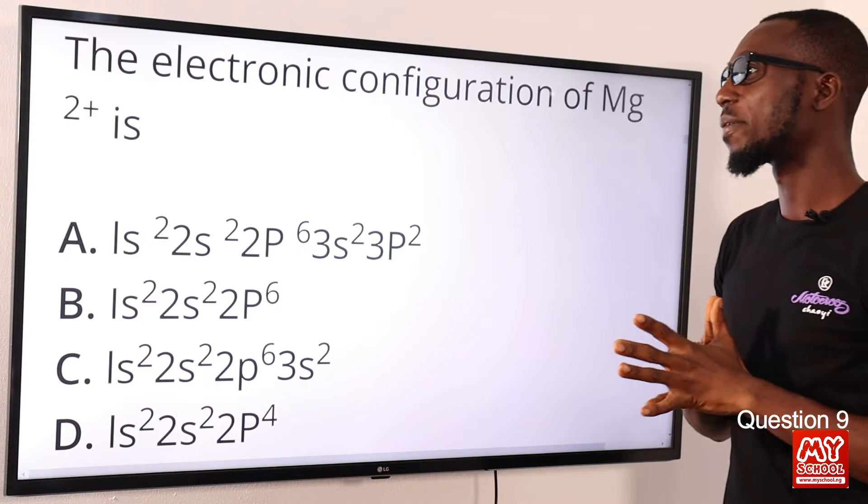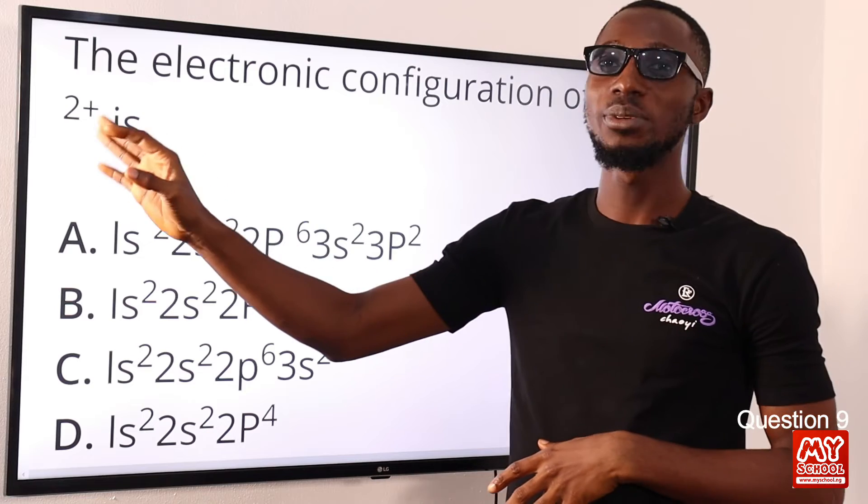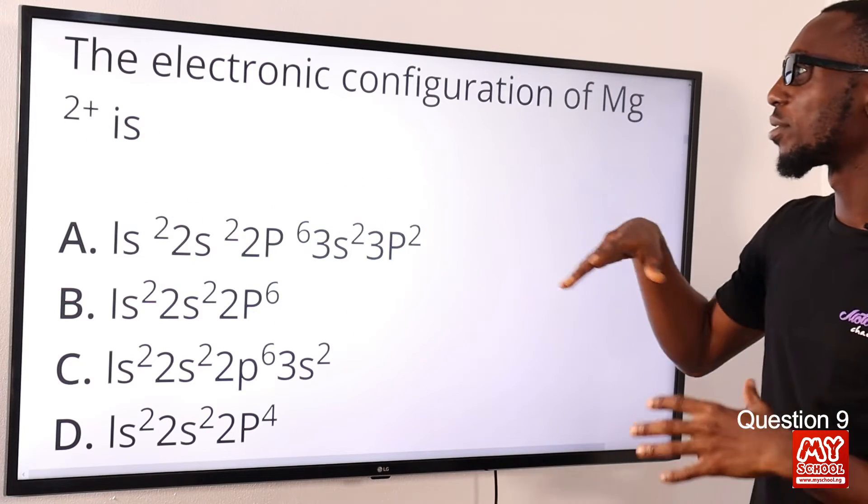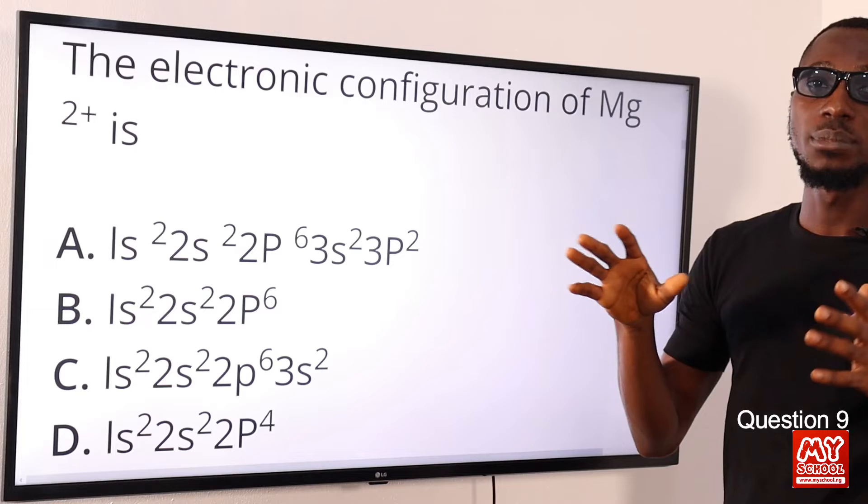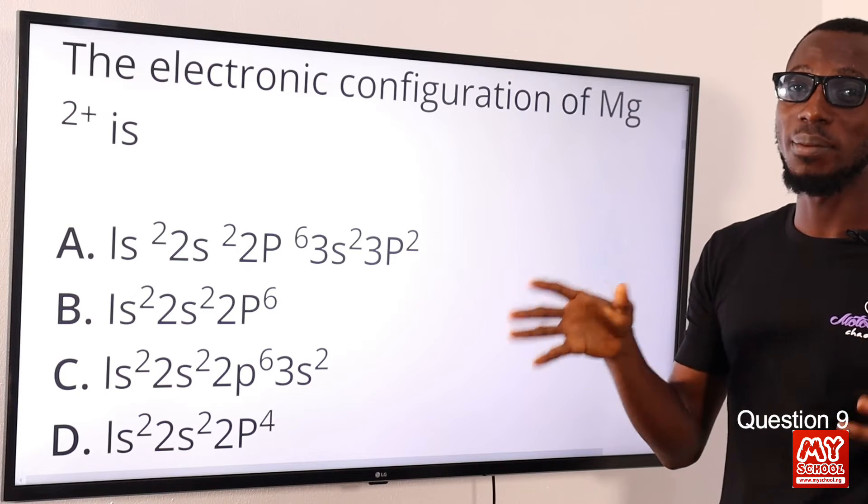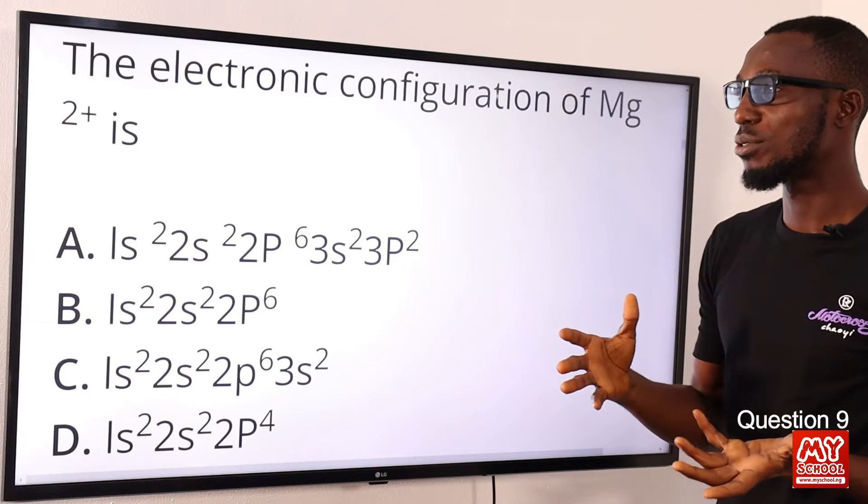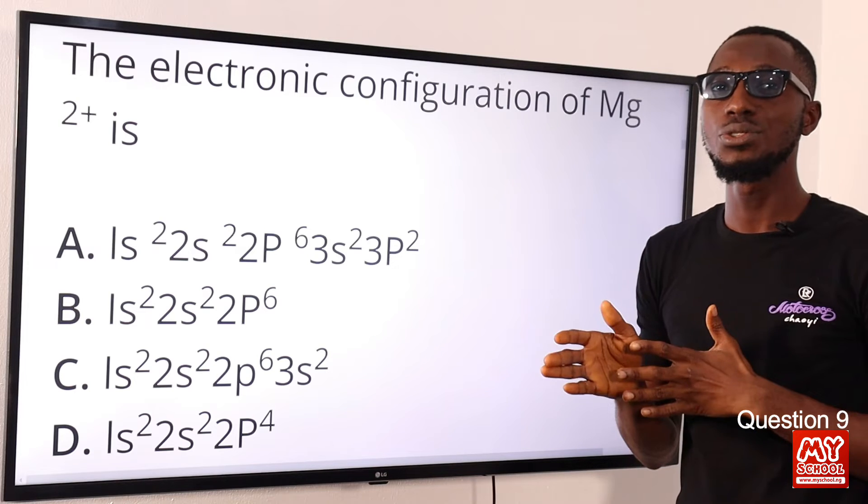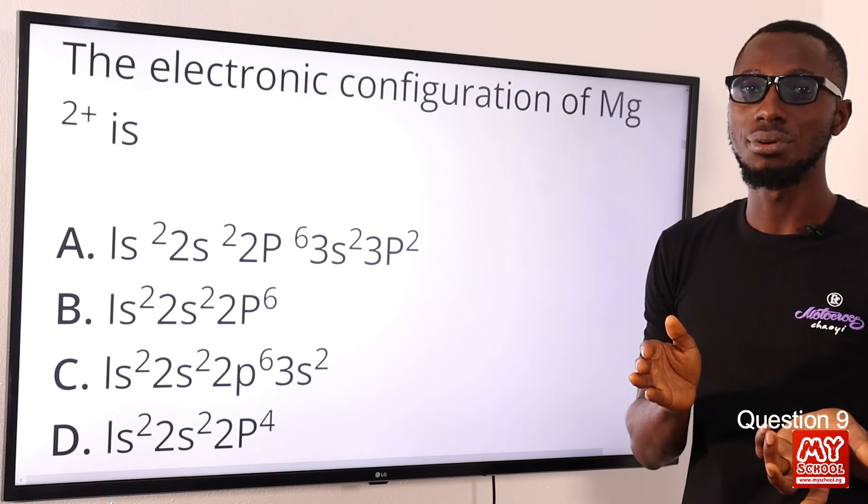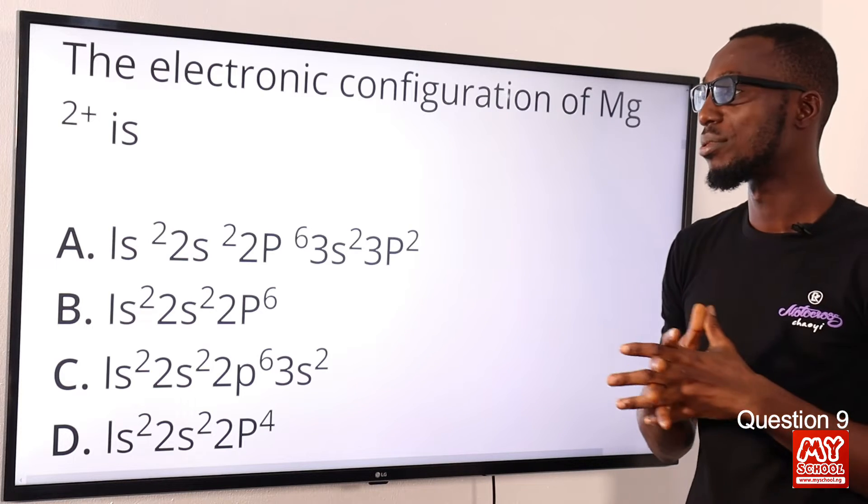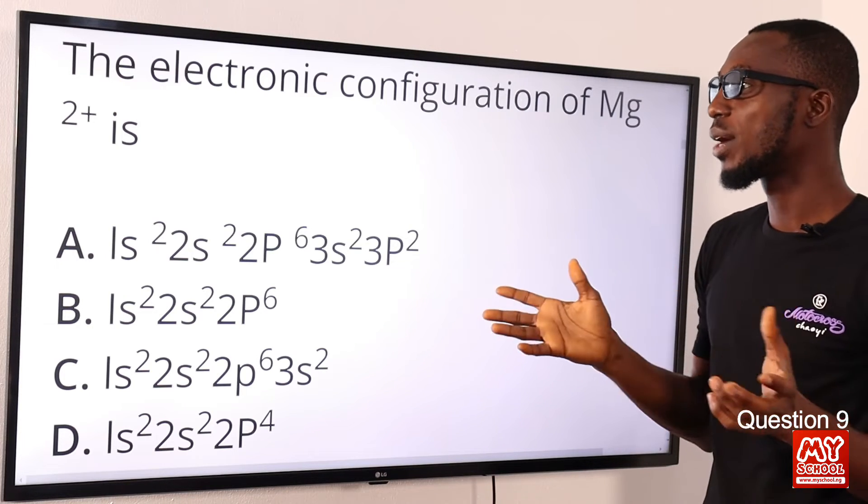Question 9: The electronic configuration of magnesium ion Mg²⁺ is what? We can see that it has lost two electrons. The normal electronic configuration of magnesium atom would have been 12—I'm talking about atomic number 12. But here we are told that it has lost two electrons.